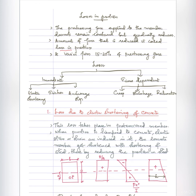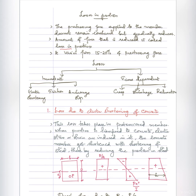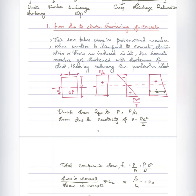We have two types: mainly time-independent and time-dependent. When a force is applied to a beam at that moment, the time-independent losses are elastic shortening, friction, and anchorage slip. The time-dependent losses gradually change over a long time. These time-dependent losses are creep, shrinkage, and relaxation of steel.